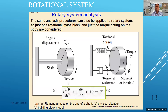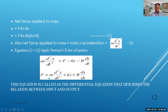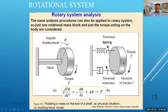Now we will see how the rotary system can be developed. The procedure is very similar; only here we consider torque instead of force, and the shaft acts as a spring and provides damping. From the free body diagram, the equation is analogous to the translational case: torque equals I times d²θ/dt² plus kθ plus c times dθ/dt. This is the equation of the rotational system.